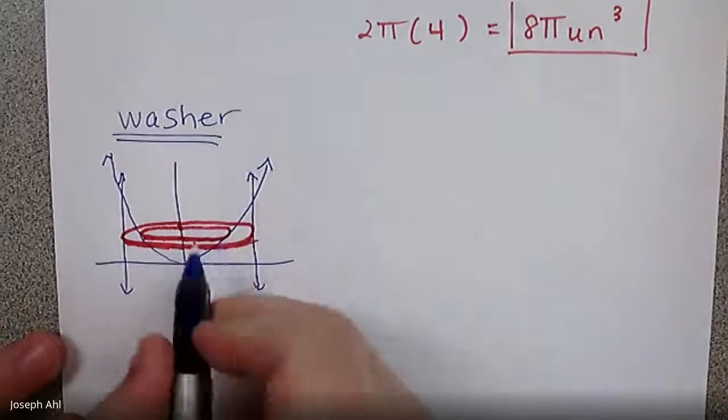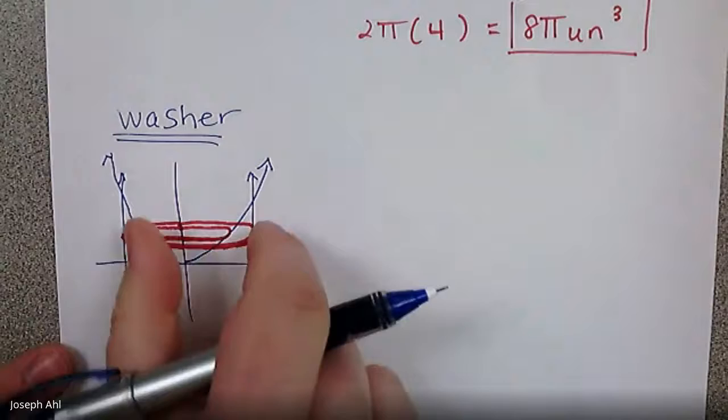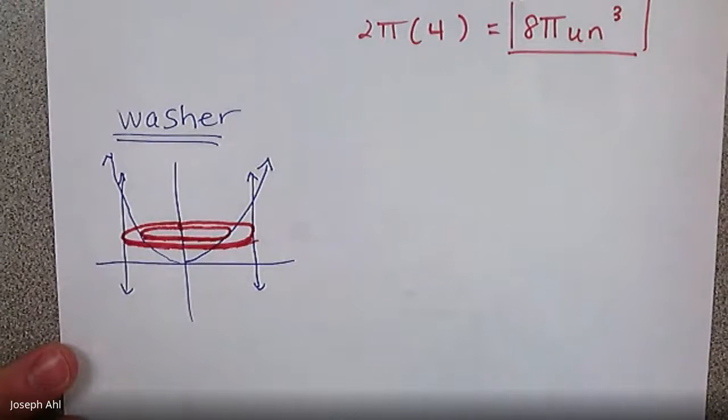So since we're taking our rectangles that are perpendicular to this axis and spinning them around this way to get these washers as a result, we're going to have to integrate as x with respect to y.